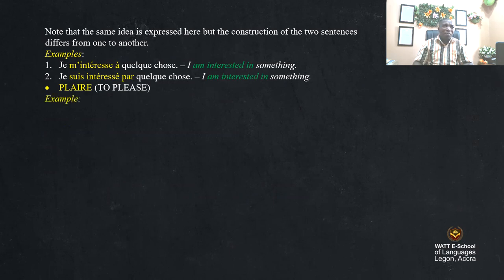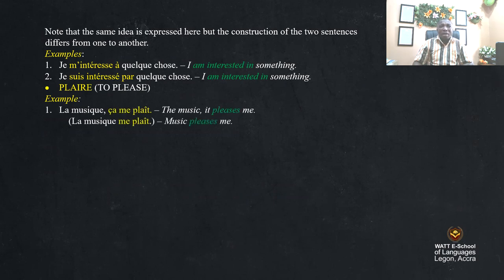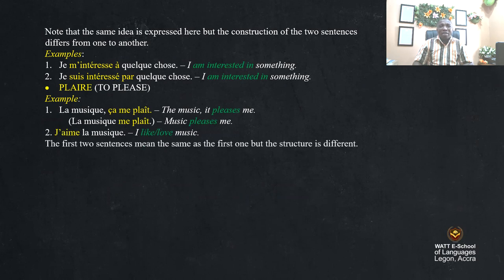'Plaire' — that is to please. Example: 'La musique, ça me plaît' — the music, it pleases me. 'La musique me plaît' — music pleases me. 'J'aime la musique' — I like or love music. The first two sentences mean the same as the last one; the structure is different — that's what you should understand.